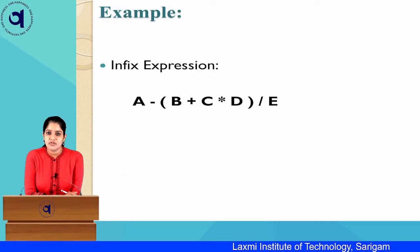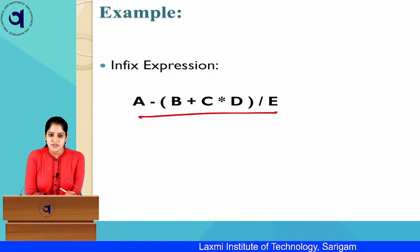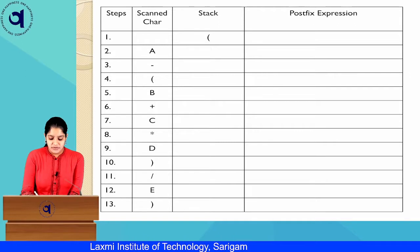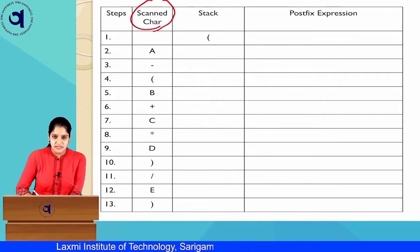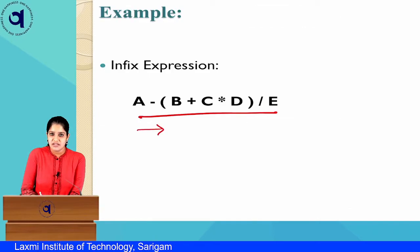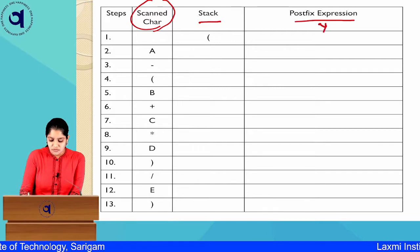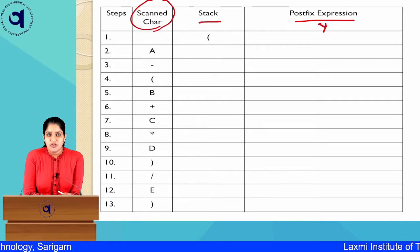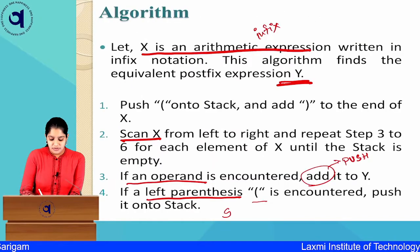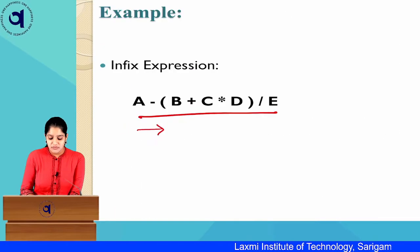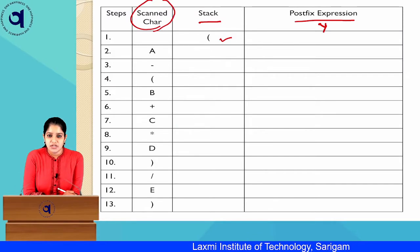Now let us see an example based on this algorithm. The infix expression is: A minus bracket B plus C star D bracket slash E. We create a table with columns for scanned character, stack S, and postfix expression Y. According to the algorithm, first we push the opening bracket onto the stack and append a closing bracket to the end of X.